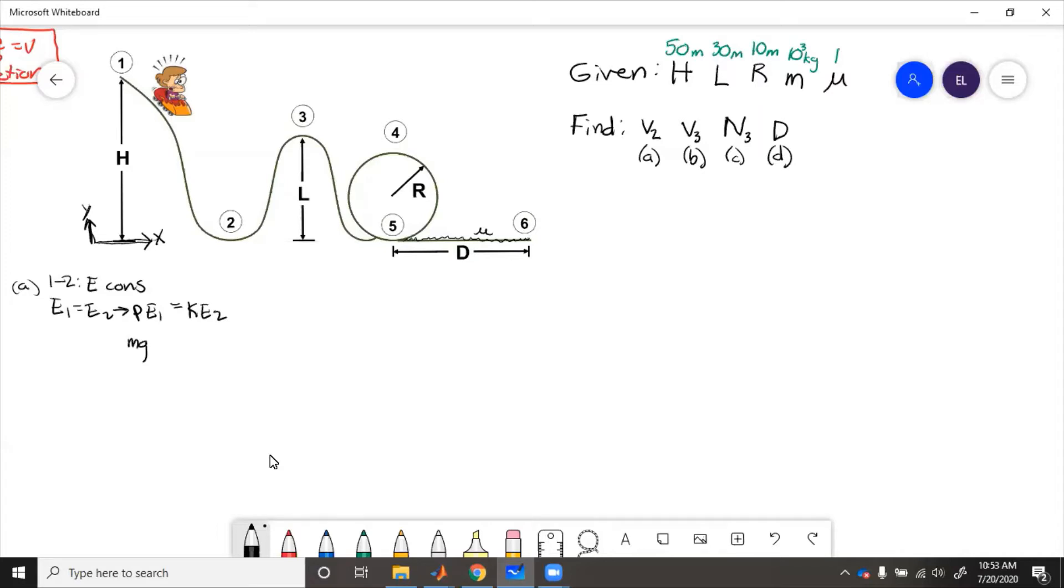So then we have mgh equals one-half mv2 squared, and the m's cancel. 2gh square rooted equals v2.